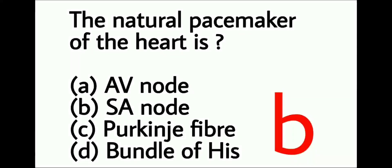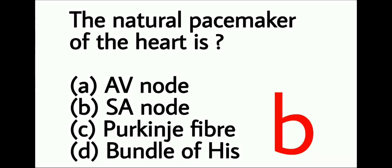The right answer is option B. SA node — sinoatrial node — is also known as the natural pacemaker of the heart. SA node is known as the pacemaker of the heart because it generates impulses, and those impulses cause the heart to beat. The rate of impulses generated by the sinoatrial node is approximately 100 per minute. SA node is a specialized group of cardiac muscle cells in the wall of the right atrium at the entrance of the superior vena cava.